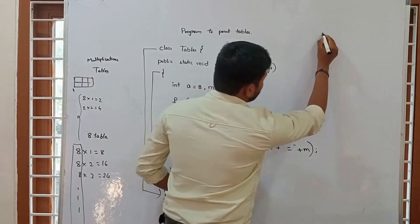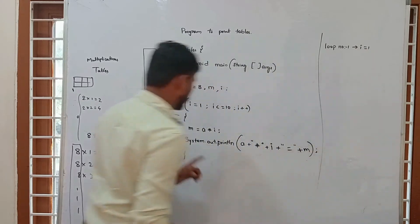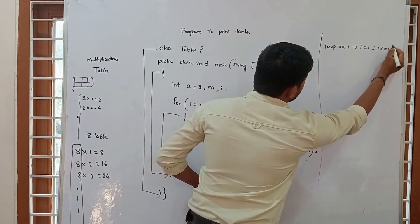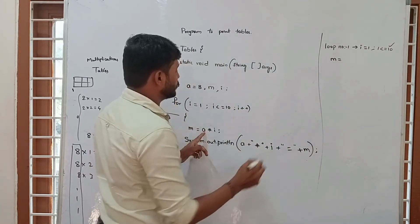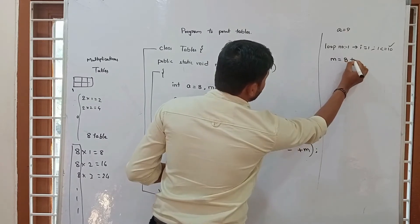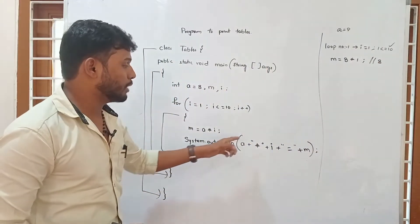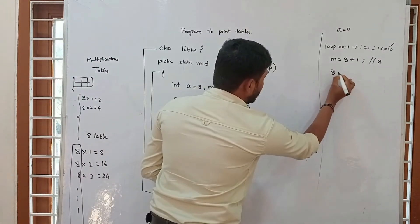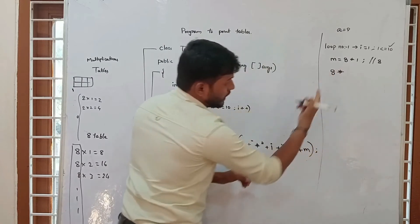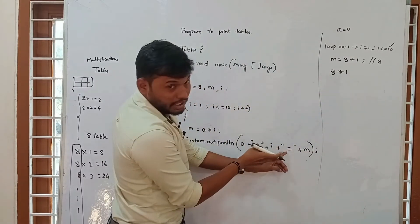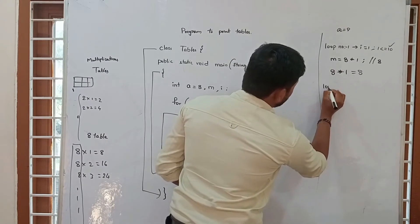In loop number 1, i starts from 1. i equals 1, and 1 is less than or equal to 10, so the condition is satisfied. Now m equals a into i, which is 8 into 1, so m equals 8. System.out.println prints: a value is 8, then i is 1, then equal to, then m which is 8. So output is: 8 * 1 = 8.